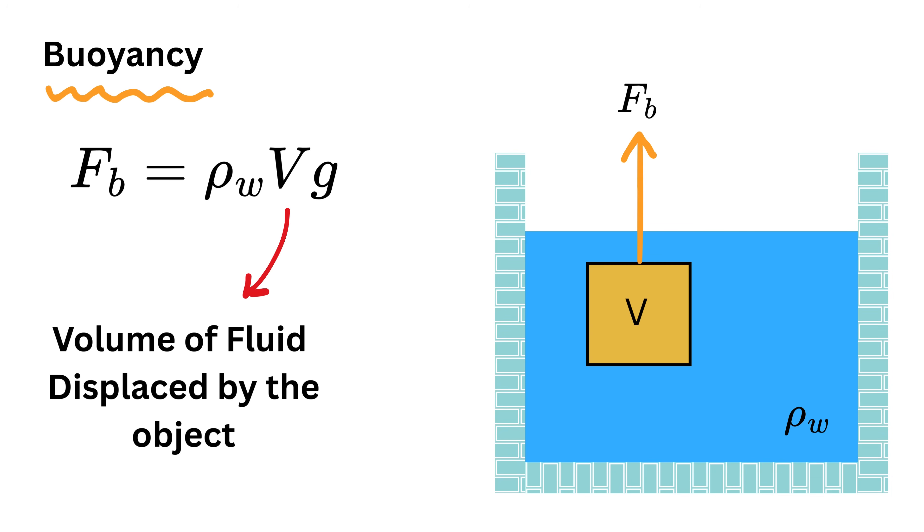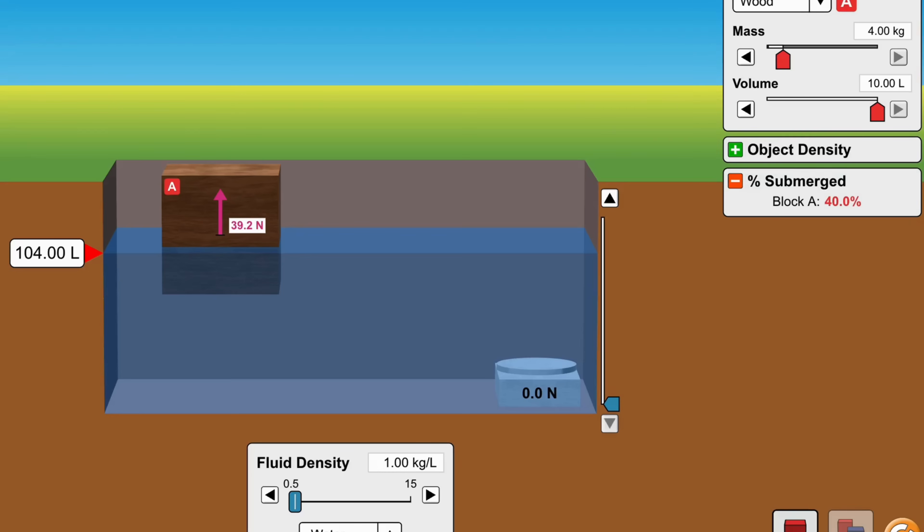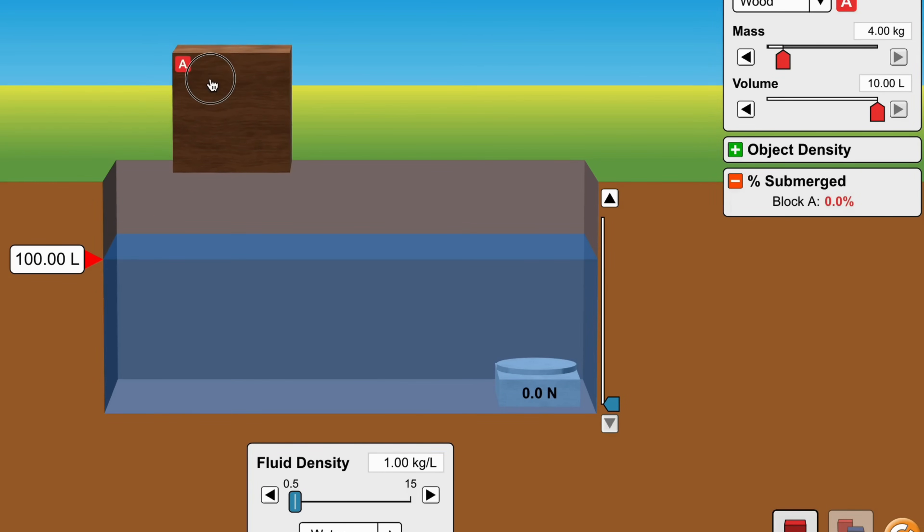Now many of us get confused with this V. Is this volume of fluid V displaced by the object the same as the volume of the object? For that, look here. When there is no object inside the fluid, its volume is 100 liters and there is no buoyant force acting on the object.